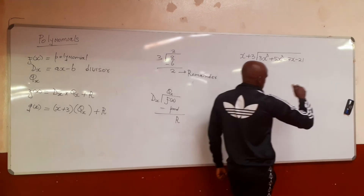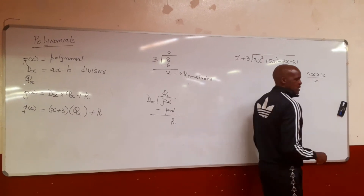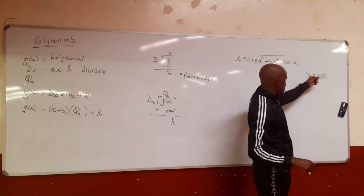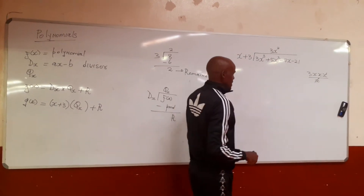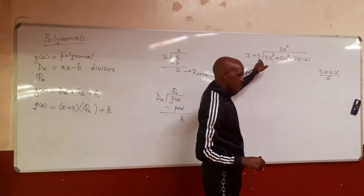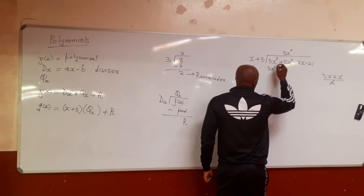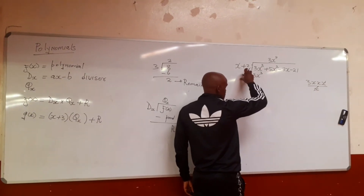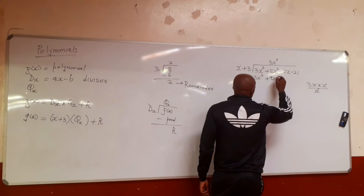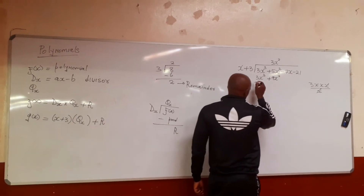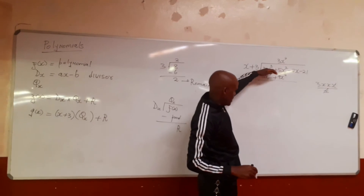3x³ divided by x gives 3x². You write 3x² in the quotient. Then to multiply, you use both terms: x times 3x² equals 3x², and 3 times 3x² equals plus 9x². That is your product. Then you take your polynomial and subtract the product.